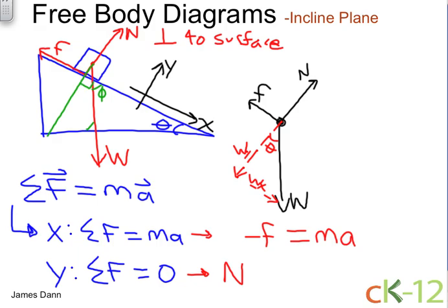then this has to be theta. Theta plus phi here equals 90 degrees, just like theta plus phi here has to equal 90 degrees. Again, because these are right triangles.